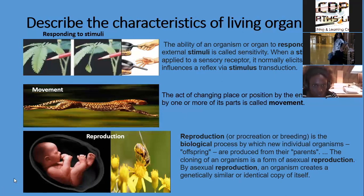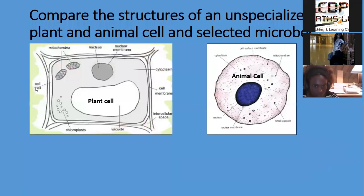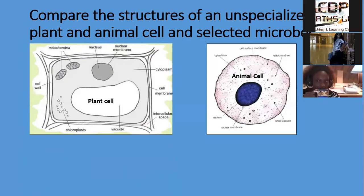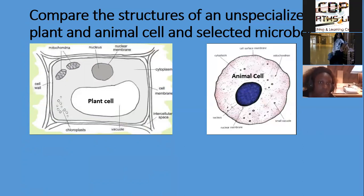Now, let's continue. We have just concluded the description of the characteristics of plants and animals. Now we're at another objective — the second objective in the syllabus under section A: to compare the structures of an unspecialized plant cell and animal cell and selected microbes. When we say to compare, you are looking for the differences and similarities as they relate to plant and animal cells and also selected microbes.